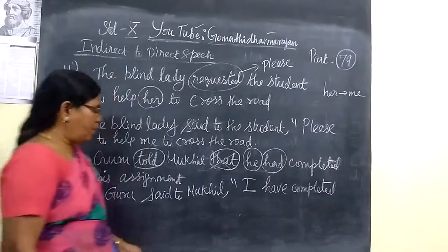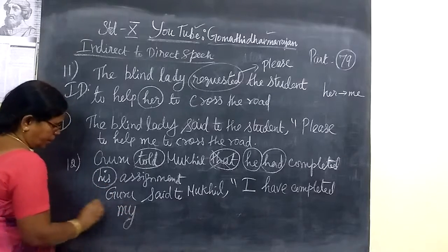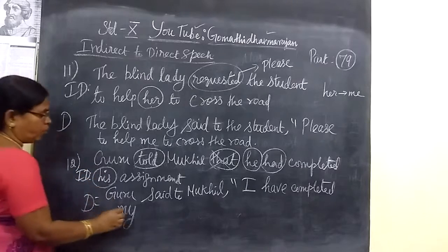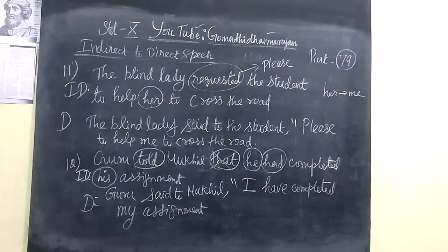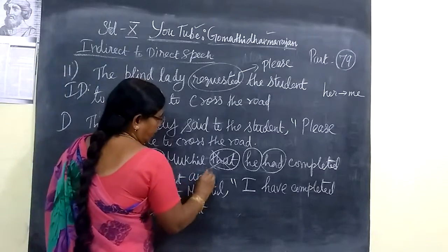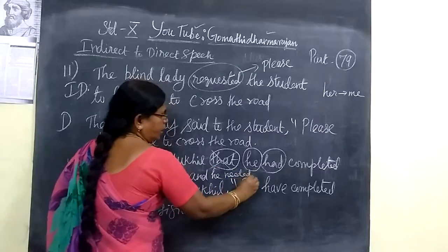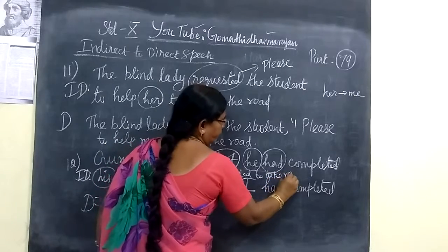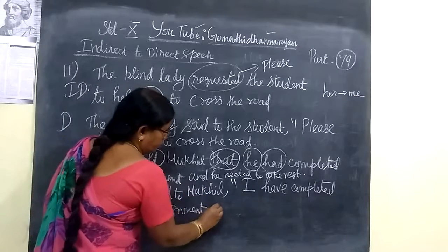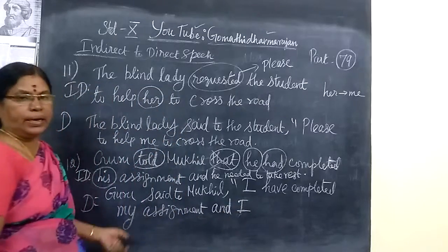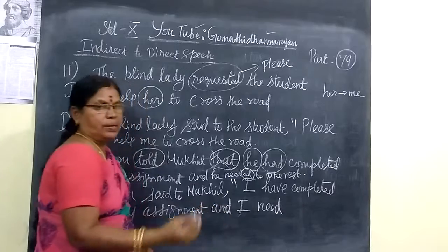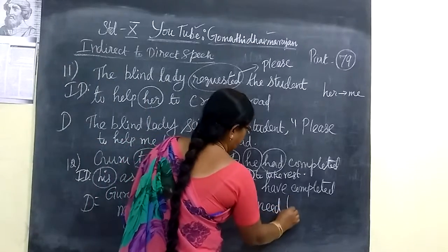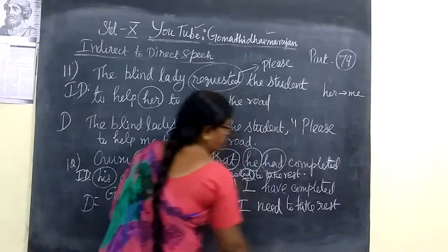Past tense is changing into present tense. So it is 'I have completed'. This is the direct form. Then 'his' is changed into 'my' — 'my assignment'. And 'he needed' — past tense is changed into present tense: 'I need to take rest for sometimes'. That's all.